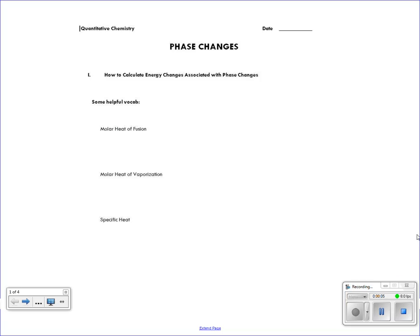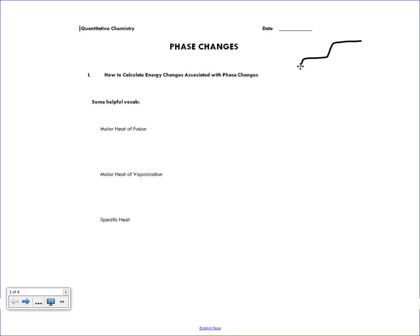Class ended hopefully with you getting to the point where we introduced the phase change diagram, which looks like a series of slopes and plateaus. That's a very conceptual notion of energy and phase changes. What we're going to do now is make it a little more quantitative — put some numbers on it. The first thing to do is define some vocabulary.